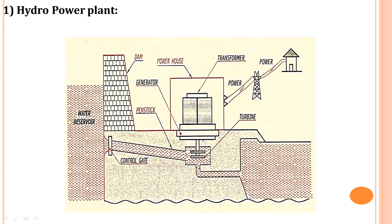In the powerhouse, electricity is generated by the generator. Through the transformer, cables carry power to electric poles and supply it to houses. The process: potential energy of stored water is converted to kinetic energy by passing through the penstock. Huge stored water beside the dam has higher potential energy, and converting it to kinetic energy drives the turbine.